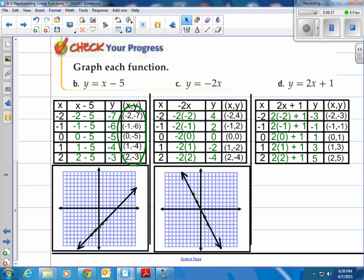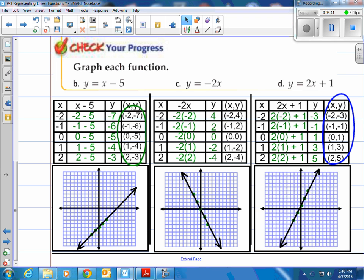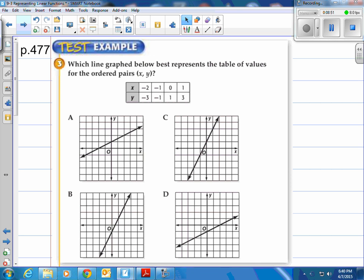How about d? Similarly, we plug in all the numbers for x, negative 2, negative 1, 0, 1, and 2. Do the math. Come out with negative 3, negative 1, 1, 3, and 5. Those are the corresponding points right here that will generate that linear equation of the line here, and now you're complete.